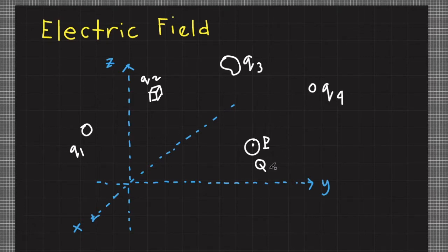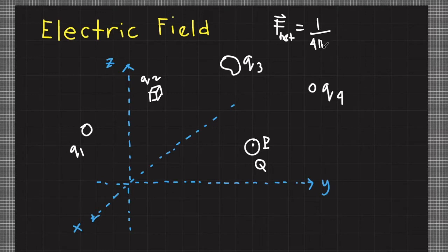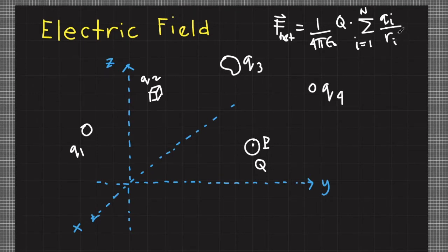Coulomb's law states that if all these source charges have non-zero charge, then they can exert an electric force on our test charge capital Q. So if I write down Coulomb's law here, the net force on charge Q is equal to 1 over 4 pi epsilon naught times the charge of Q times the summation of the influence of all the source charges — equals 1 to n: q sub i over r sub i squared, r-hat.